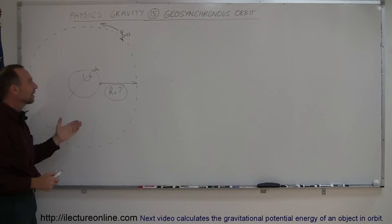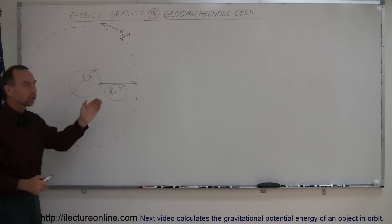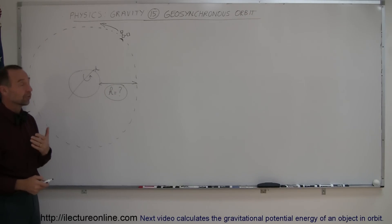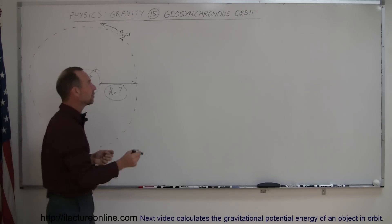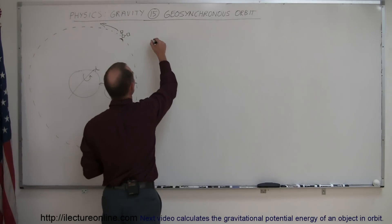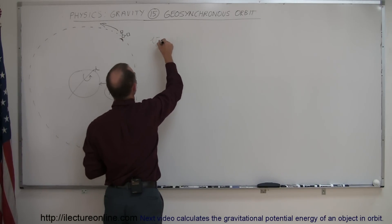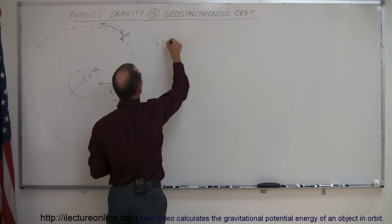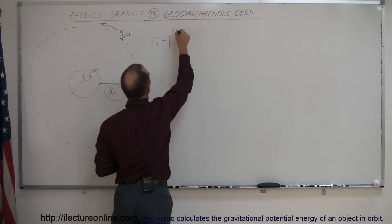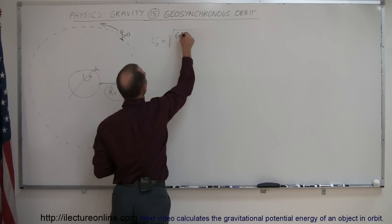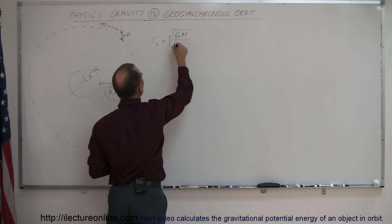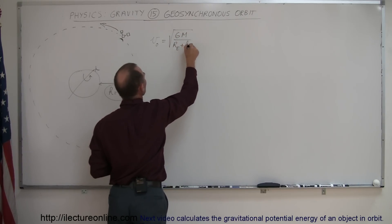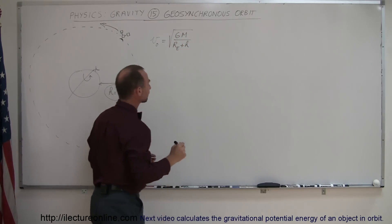So how do we find out how high that orbit has to be for satellites to be geosynchronous? We have the equation for orbital velocity: orbit velocity is equal to the square root of GM divided by the radius, which is the radius of the earth plus the height of the orbit.